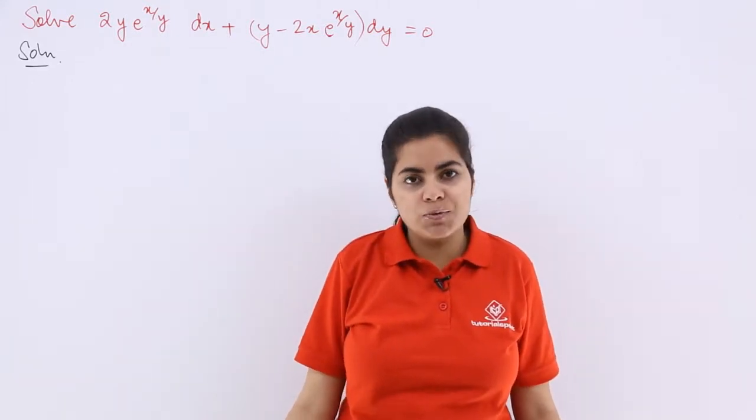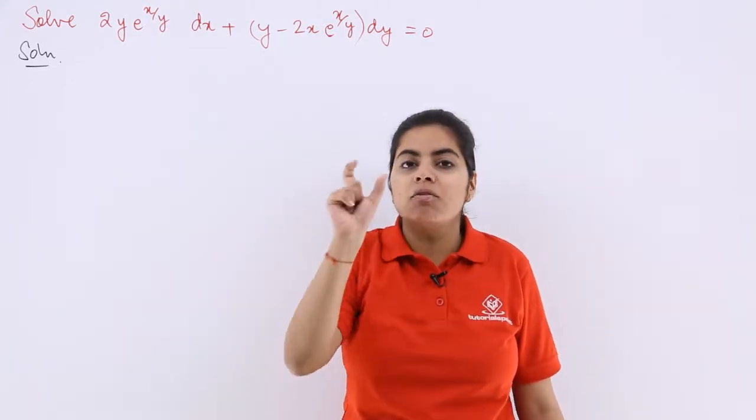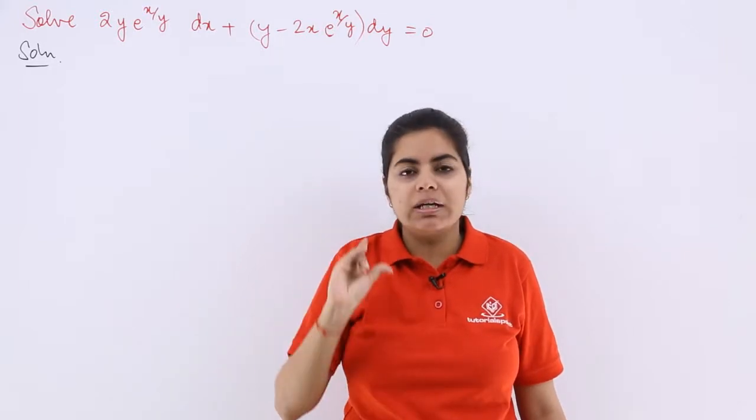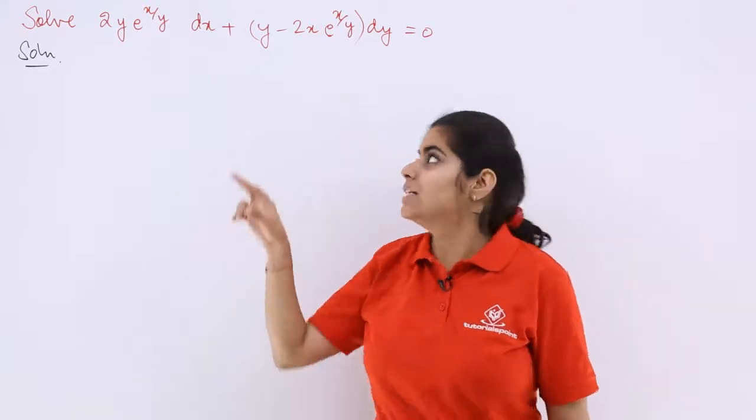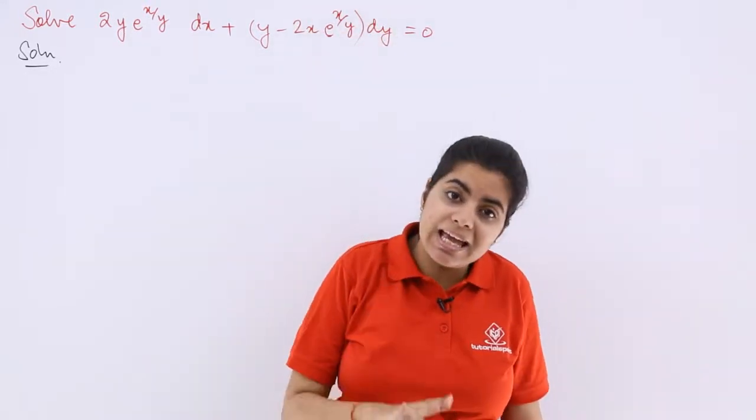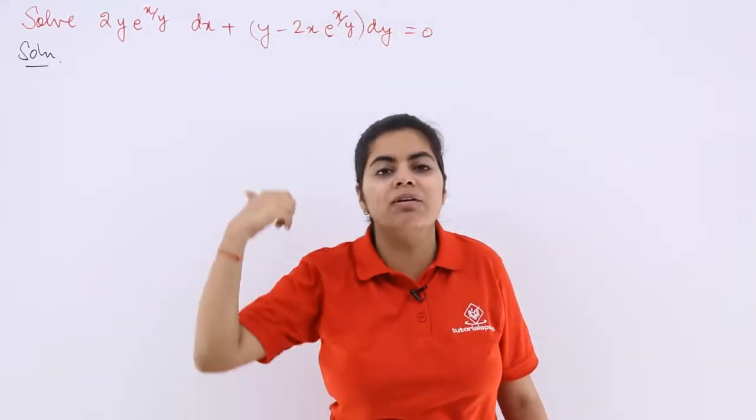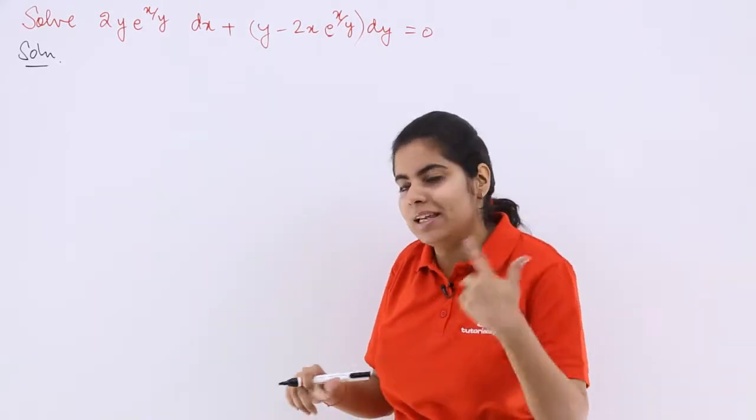So usually what do we use to substitute in homogeneous questions? y = vx. But this time since x upon y is everywhere there, let's write x upon y is equal to v. That means x is equal to vy. So everything will be changed and how it will be, let's see.